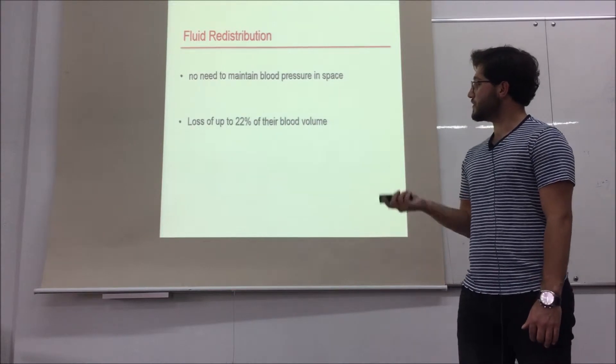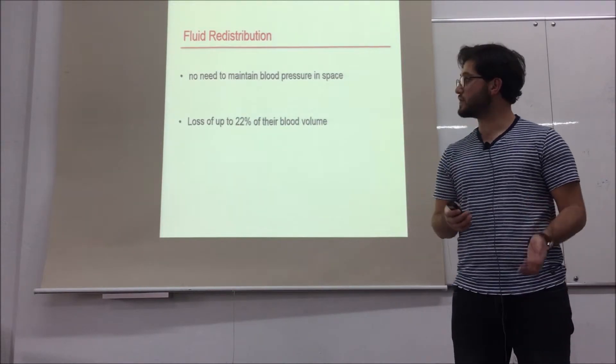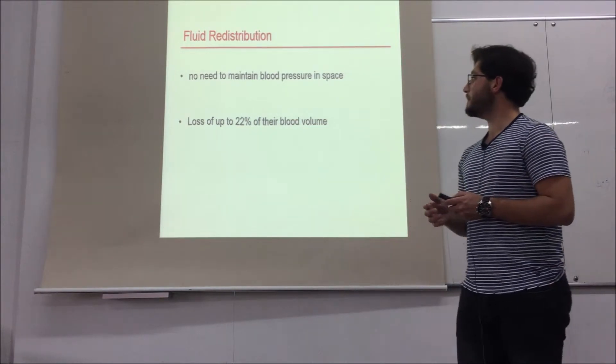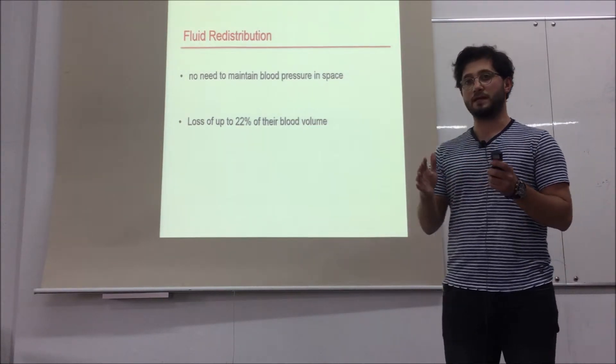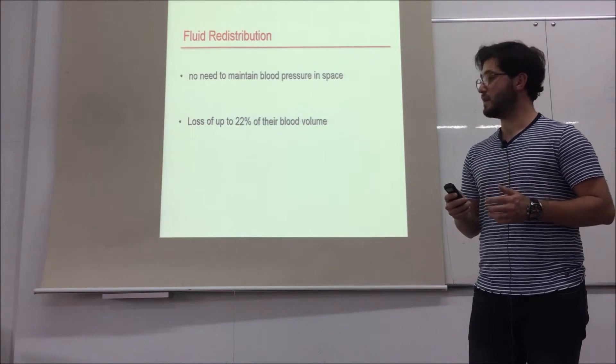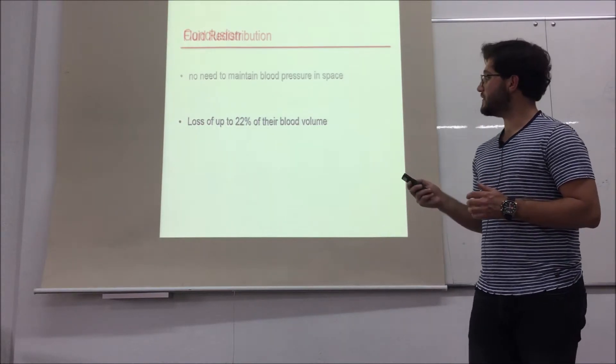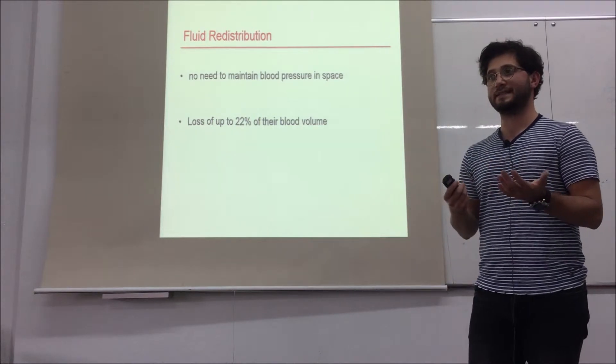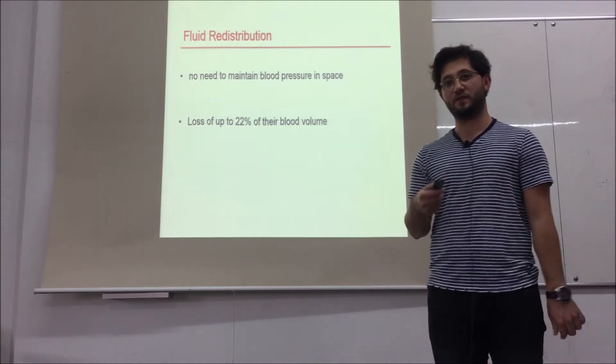According to another research of NASA, astronauts can lose up to 22% of their blood volume. Because of less blood to pump, the heart will atrophy. As a result, a weakened heart cannot send enough oxygen to the brain.